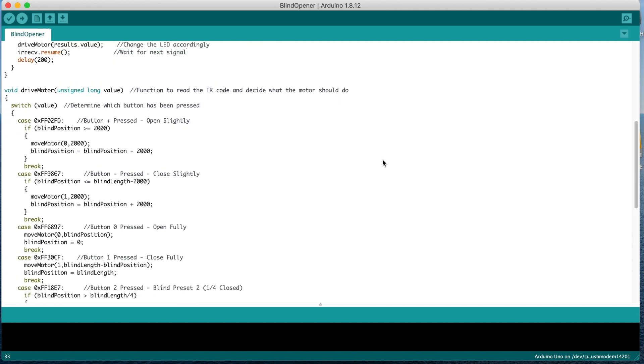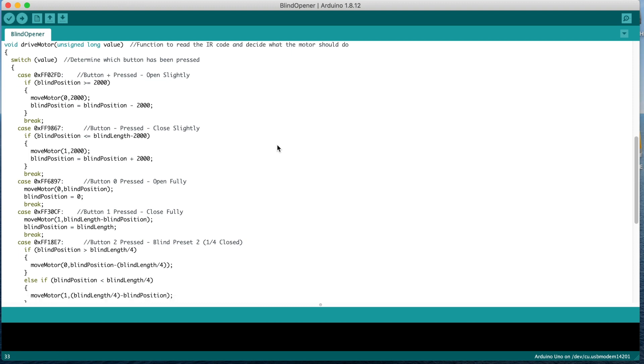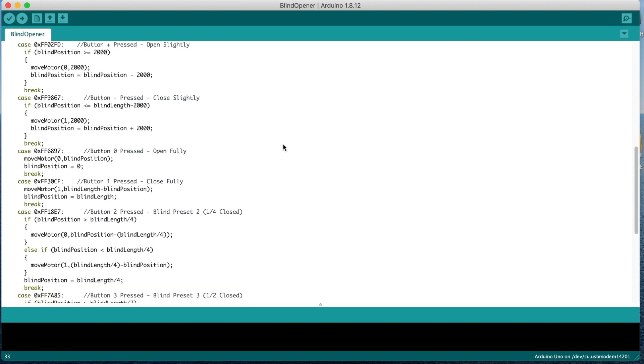The drive motor function gets the infrared signal as an unsigned long variable type. The switch statement then decides what the motor should do based on the signal received. The hex codes in this section need to be changed according to what was shown in your serial monitor when you push the corresponding button on your own remote. You can use the remote that came with your sensor or an old TV remote or a universal remote as long as your Arduino can read the signal from it.